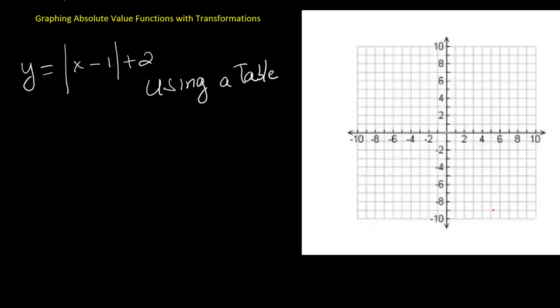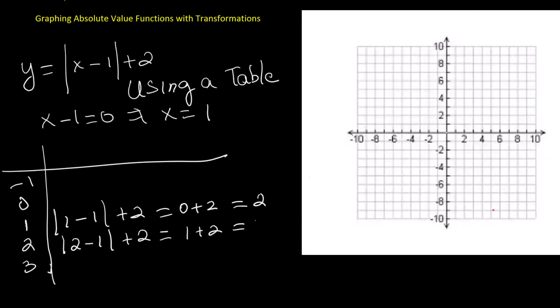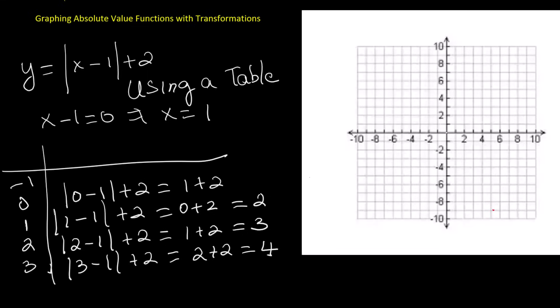If you like tables, here's how to do it. Set the inside equal to 0 to find the x-coordinate of the vertex. For x minus 1, that gives x equals 1. Now choose two points on each side. At x equals 1, y equals 2. At x equals 2, the inside is 1, so y equals 3. At x equals 3, the inside is 2, so y equals 4. At x equals 0, the inside is negative 1, but absolute value makes it positive 1, so y equals 3 again. At x equals negative 1, the inside is negative 2, and the result is y equals 4. This symmetry produces an accurate sketch.